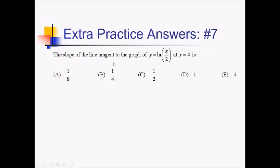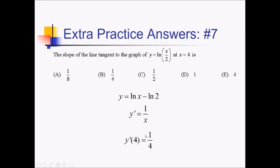For this problem, I'm trying to find the slope of the tangent line to ln of x over 2 at x equals 4. I chose to use log rules and split this up before taking a derivative. Since I'm taking the log of two things being divided, I can split that into ln of x minus ln of 2. Division turns into subtraction when you split up a log. This is a much easier derivative — just 1 over x minus 0, since ln of 2 is a constant. Plugging in 4 gives 1 fourth — answer choice B.